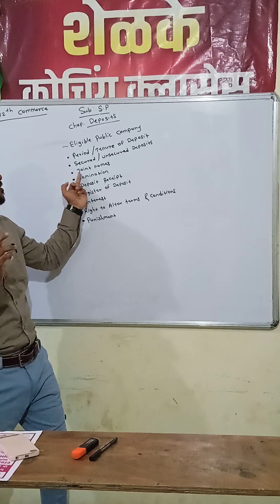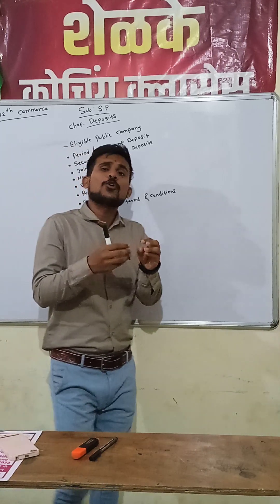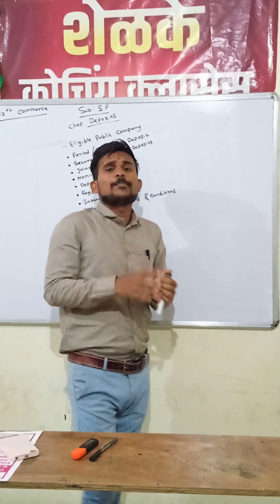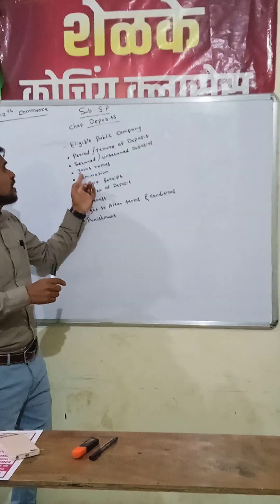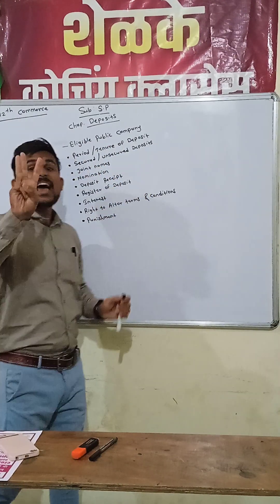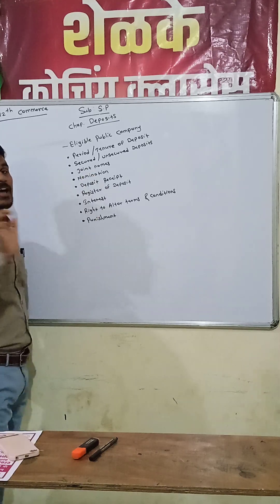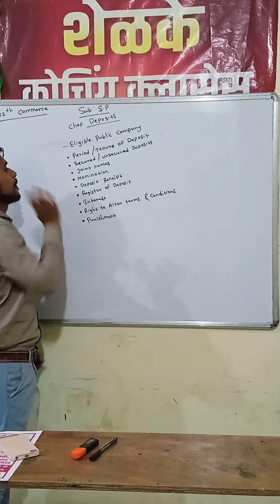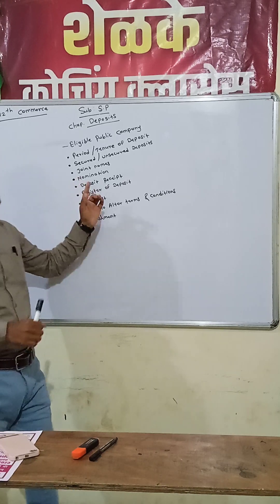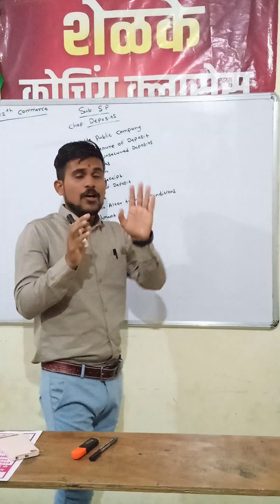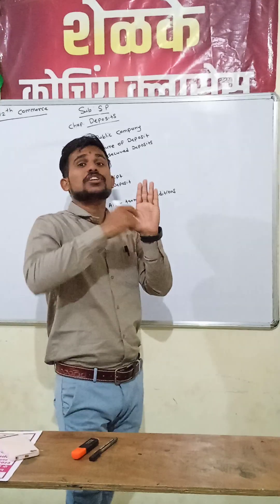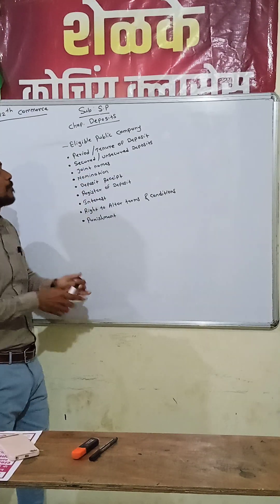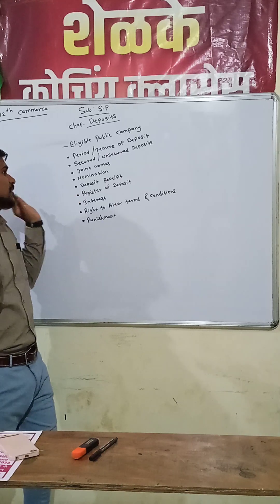Next is joint name. It is allowed for the general public or members to accept deposits in a joint name, but a maximum of 3 persons are allowed to accept the deposits. Next is nomination. While filling the application form for deposits, the name of the nominee must be mentioned in that form.